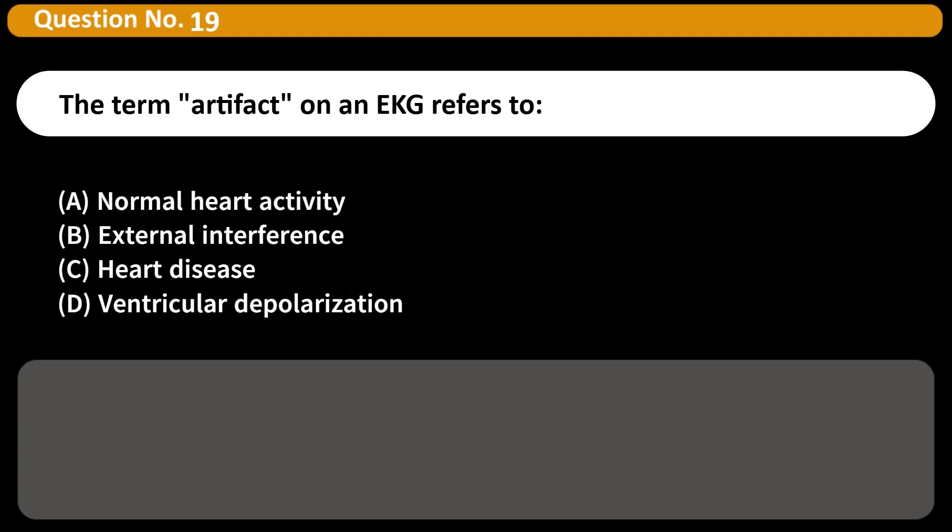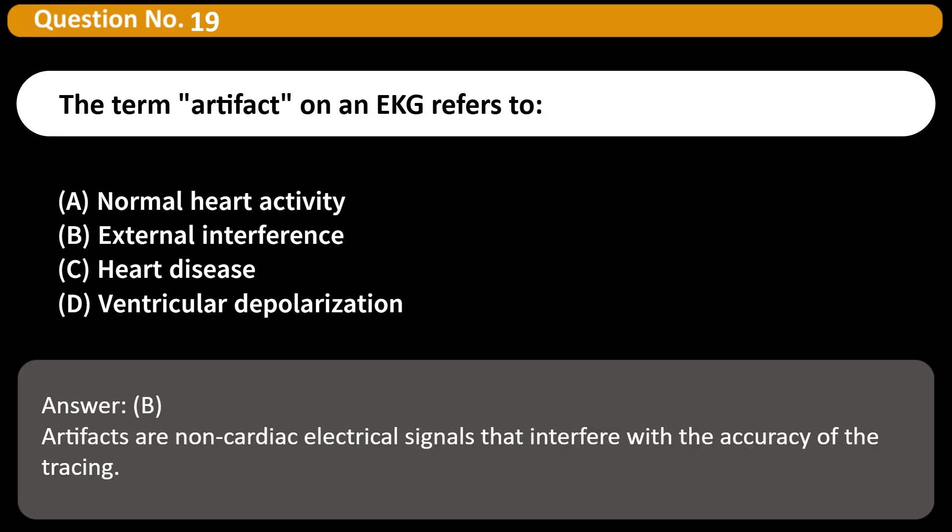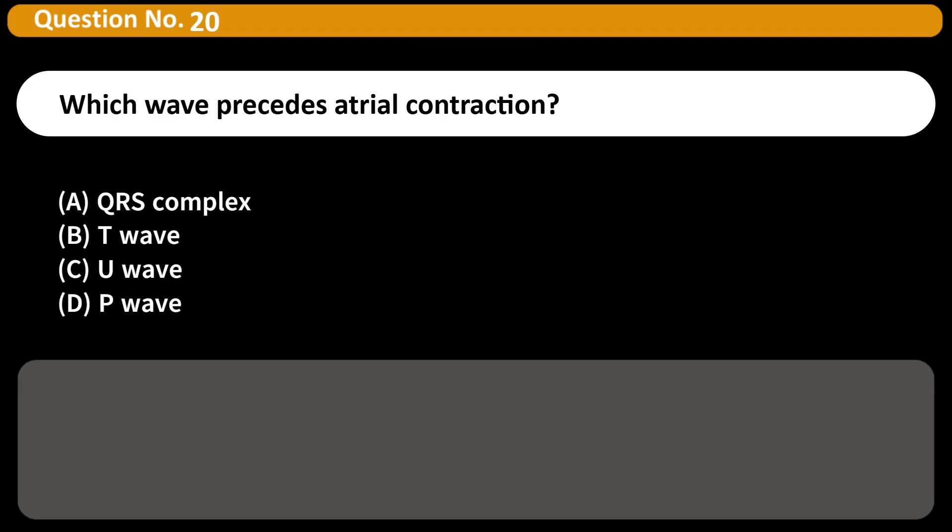The term artifact on an EKG refers to A. Normal heart activity B. External interference C. Heart disease D. Ventricular depolarization Answer B. Artifacts are non-cardiac electrical signals that interfere with the accuracy of the tracing.